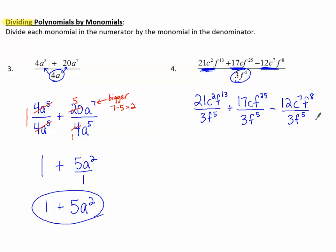Now we can divide each term using our laws of exponents. Starting with the numbers, 3 goes into itself once and into 21 seven times. I have no other c's, but I do have some f's,